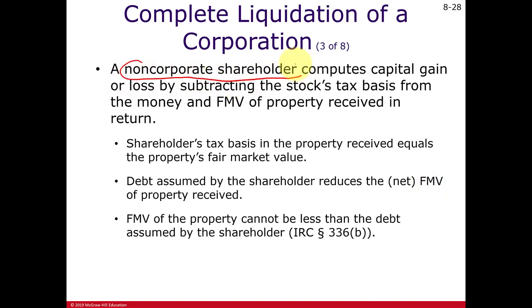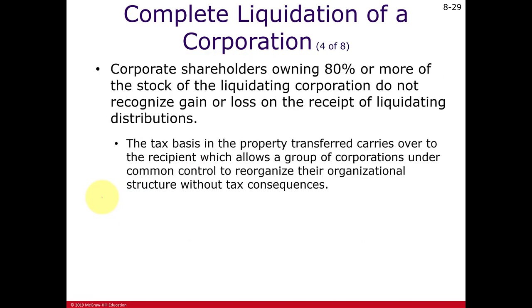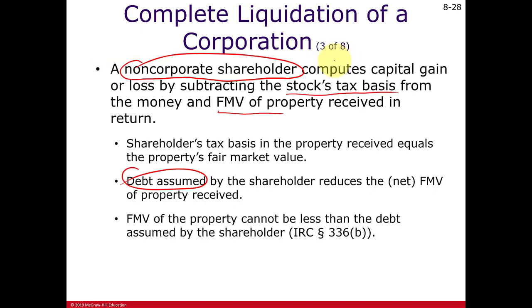For non-corporate shareholders, you report a capital gain equal to the fair market value of money or property received minus the stock basis of the shares being redeemed in the liquidation. If the shareholders assume liabilities of the corporation, you simply reduce the fair market value of property received. If the shareholder is a corporate shareholder owning less than 80%, you treat that shareholder like a non-corporate shareholder and report gain or loss.